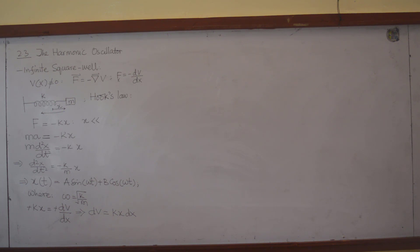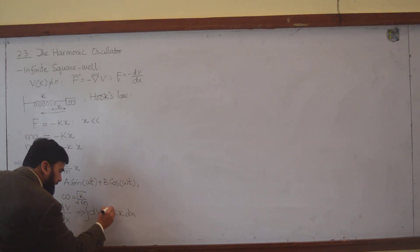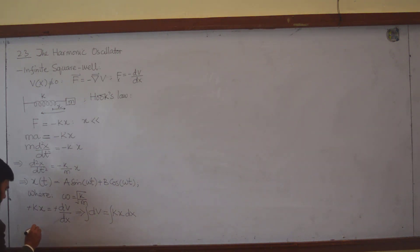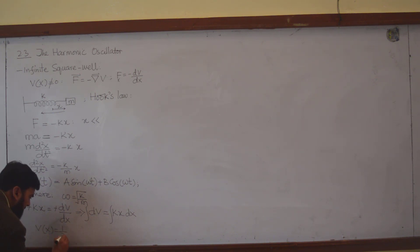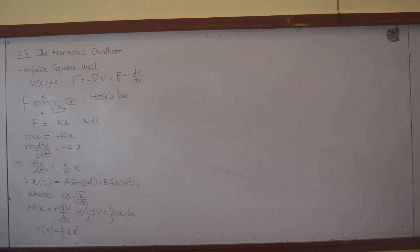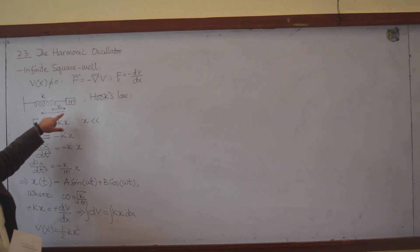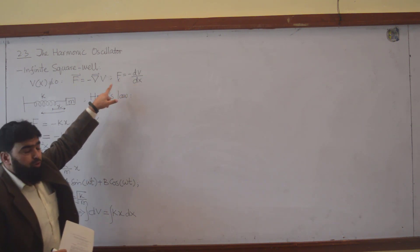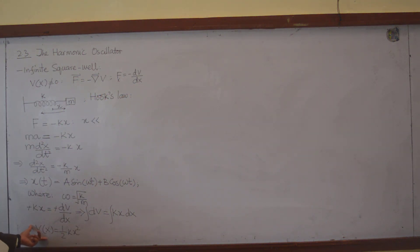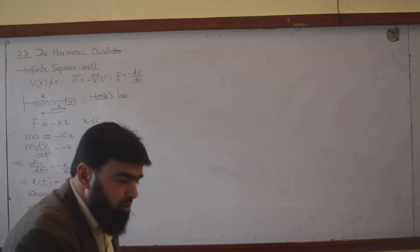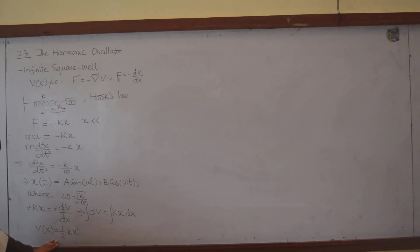We have KX dx on the right side. Integrating both sides, I get that V(X) is equal to one half K X squared. This is the potential, and I derived it from Hooke's law combined with the relation F equals minus dV/dx.